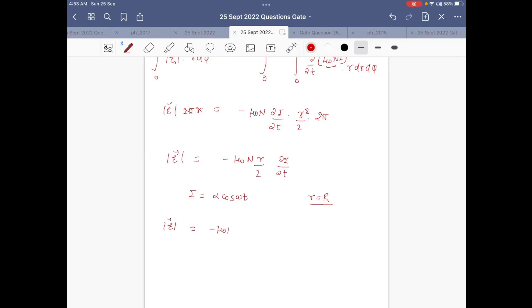∂I/∂t is derivative of α cos ωt, which is -α ω sin ωt. So it will become μ₀ α ω N capital R/2 sin ωt.